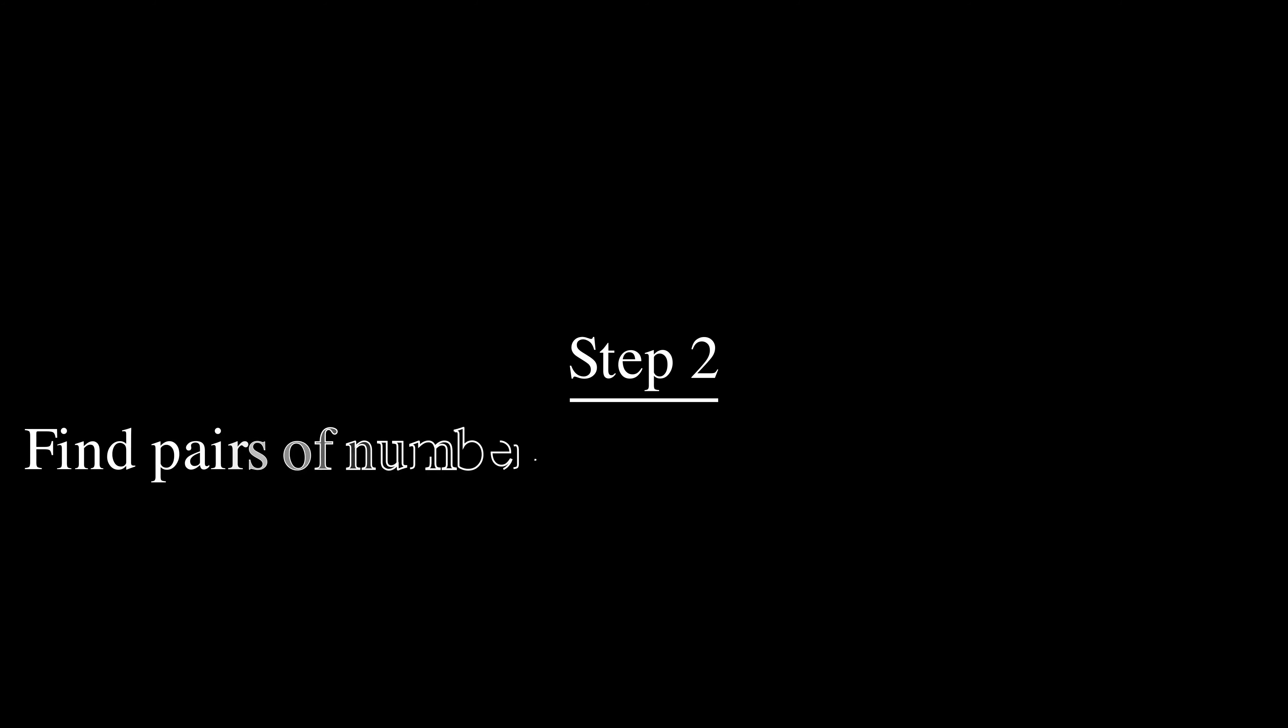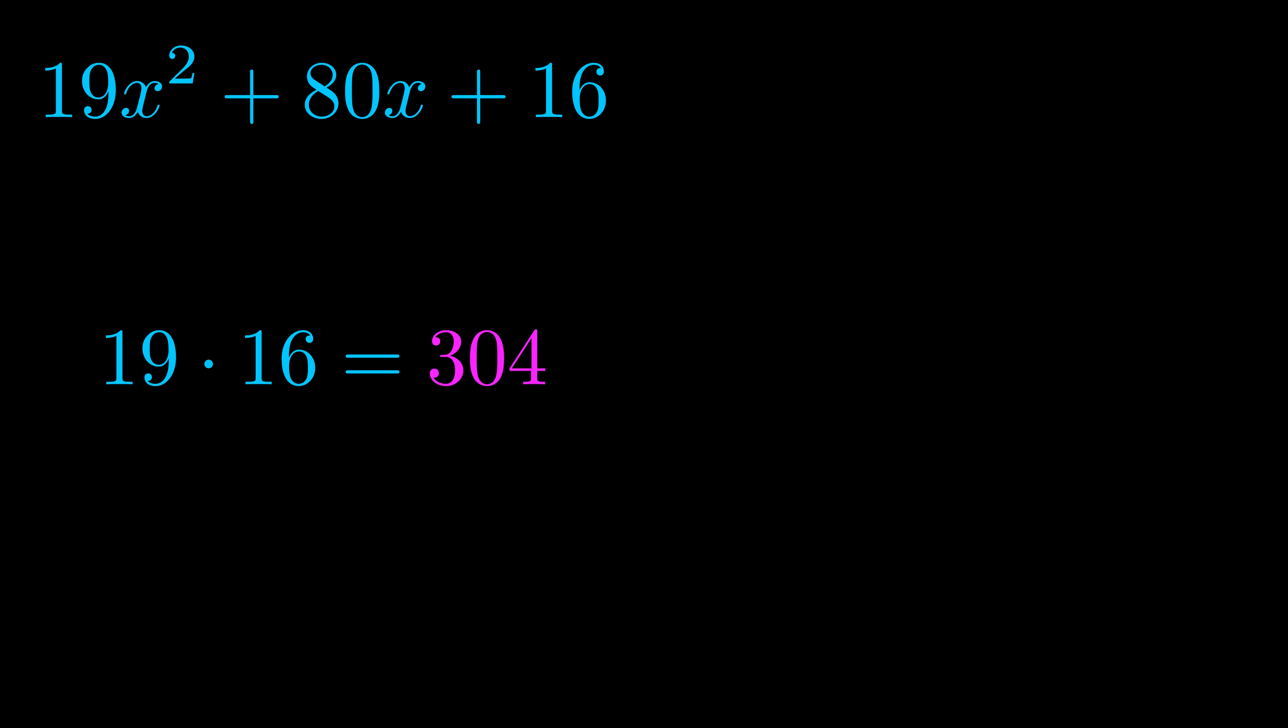Step two is to try to find all of the pairs which multiply to this number. Now turns out you don't really need to find all of them but go ahead and write down as many numbers as you can that multiply to the magenta value for now. Pause the video and resume when you're ready to continue.